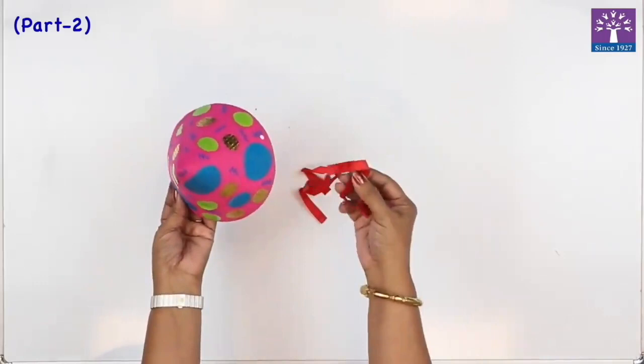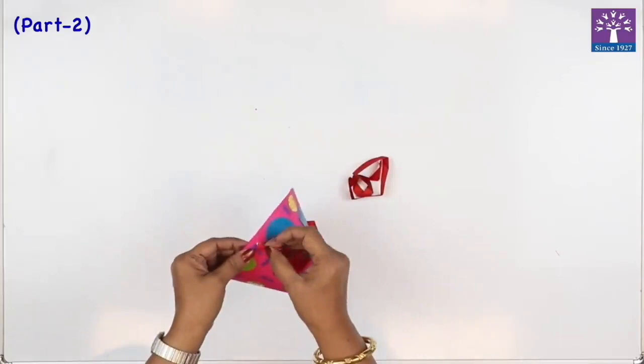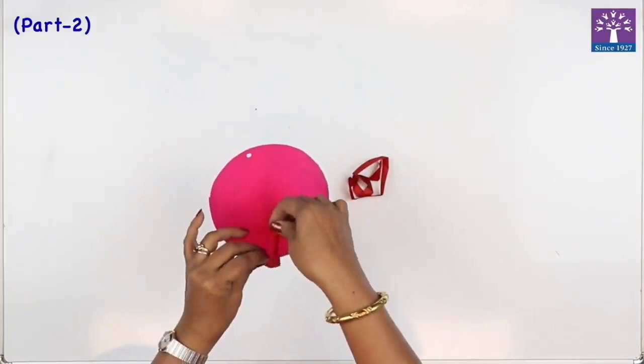Take our two ribbons and let's string this inside the punch hole. We tie a knot.